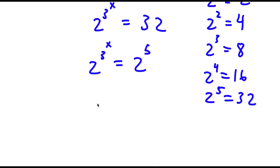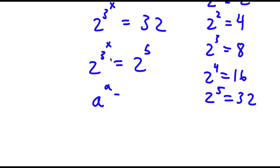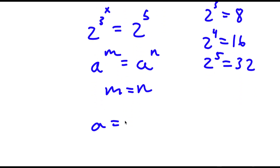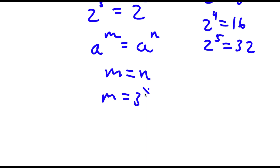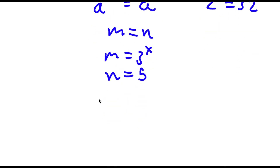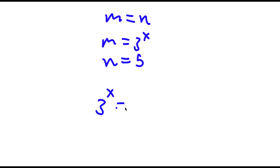Now, if I have something in the form a to the power of m is equal to a to the power of n, this means that m is equal to n. So in this case, m would equal 3 to the power of x and n would equal 5, meaning 3 to the power of x is equal to 5.